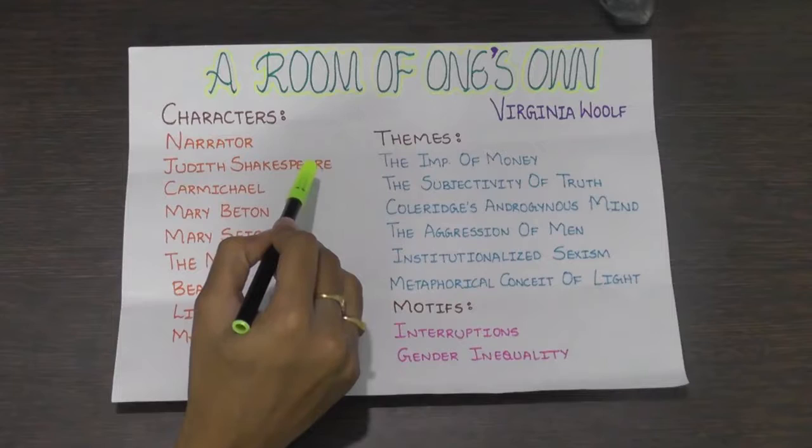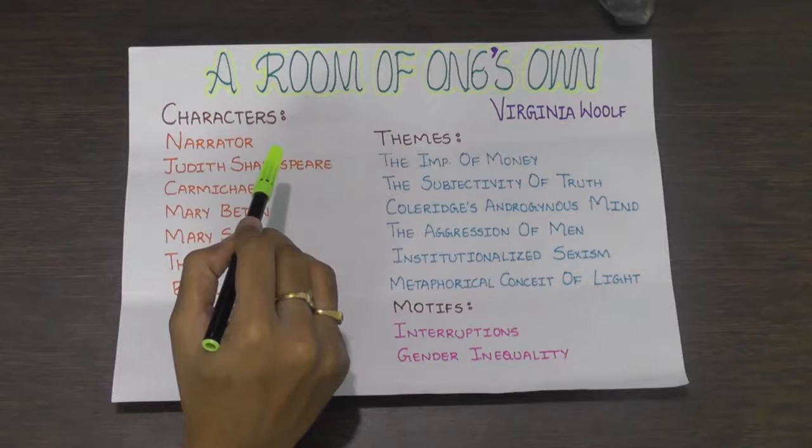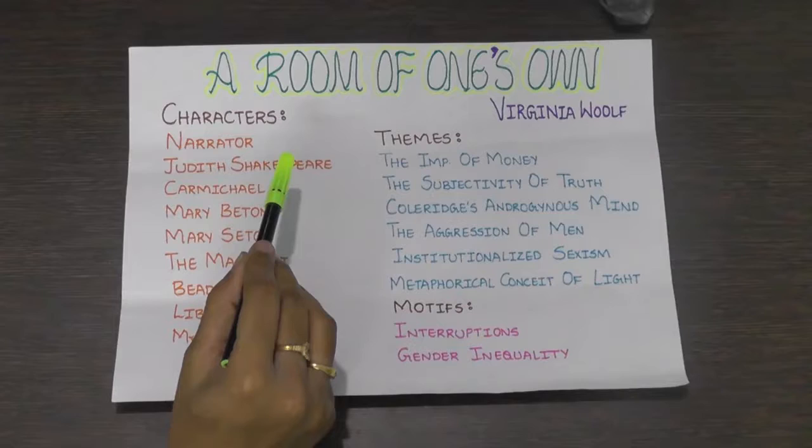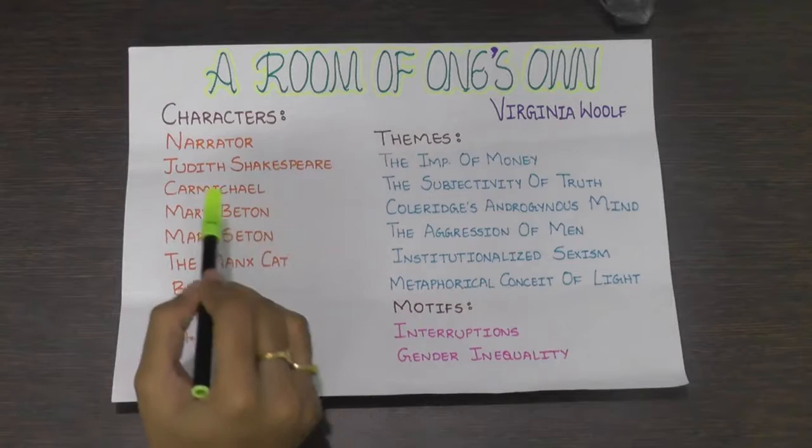Judith Shakespeare is the fictional sister of William Shakespeare. The narrator imagines Judith's life of unrealized genius. Though just as brilliant as her brother, Judith is unable to fulfill her potential in her patriarchal Elizabethan society and eventually commits suicide.